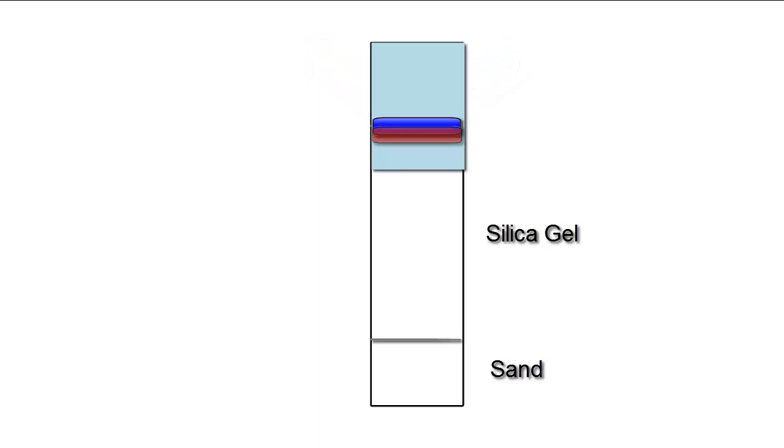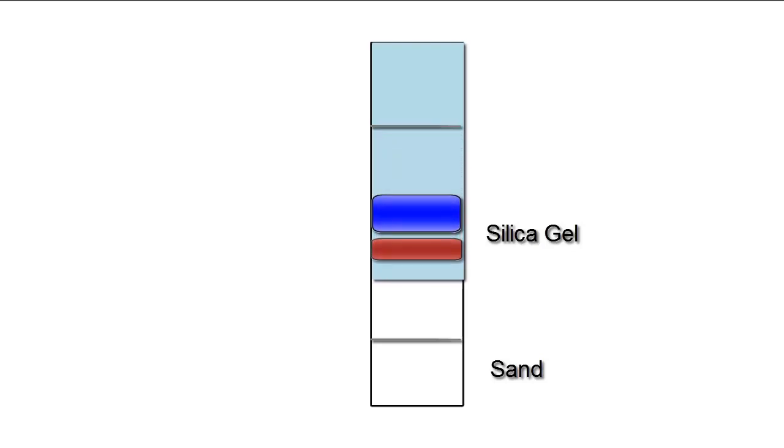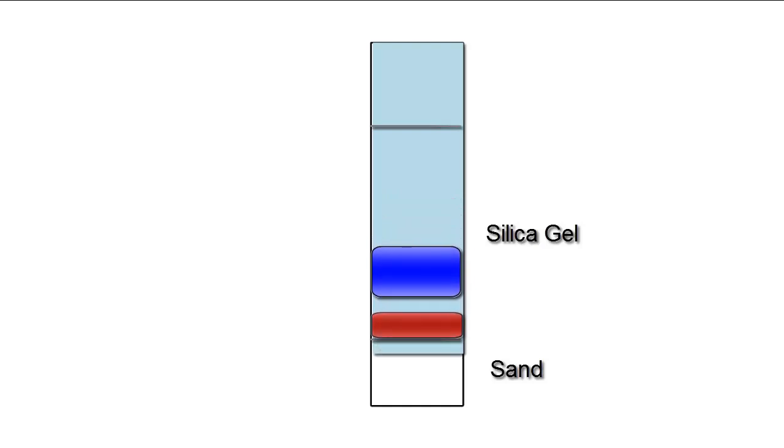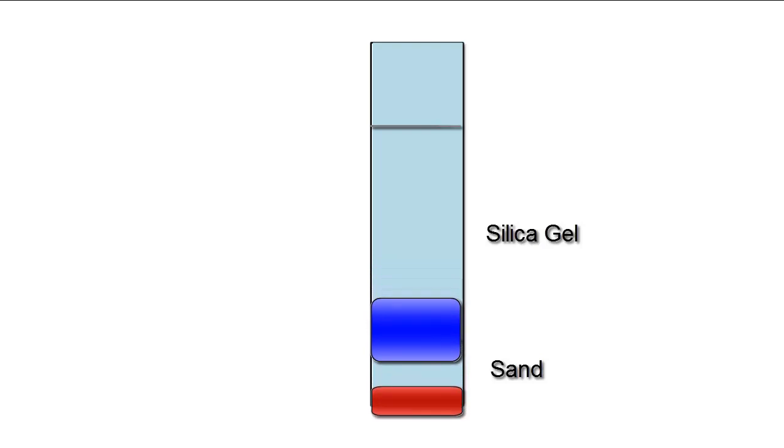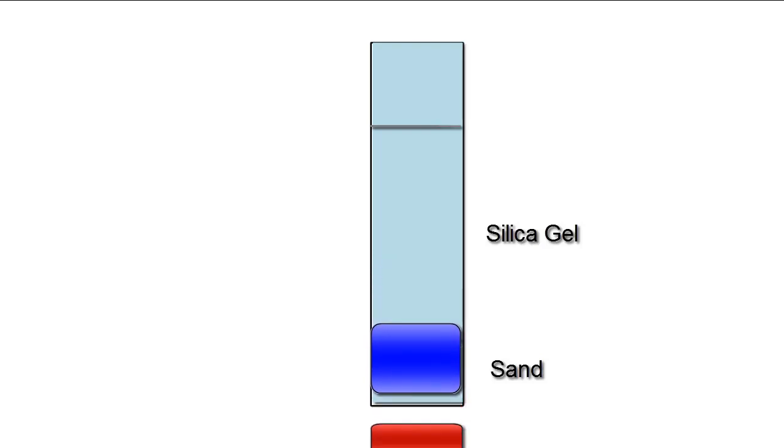And by forcing liquid through the top, the chemicals will separate, again, based upon their affinity for the stationary phase relative to the mobile phase. Except, unlike TLC, we continue to push the solvent through the system, allowing us to collect each one of the individual components of the mixture one by one, and hopefully in their pure form.